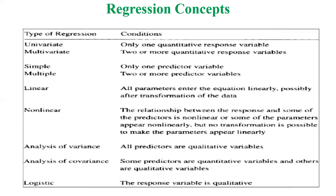In a linear model, all transformations are complete and we substitute values without complexity — such models belong to linear models. In non-linear models, the relationship between the response and some predictors is non-linear, or some parameters appear non-linearly and no transformation is possible to make them appear linear. Linear models generally give a straight line, while non-linear models produce curves or different kinds of lines.